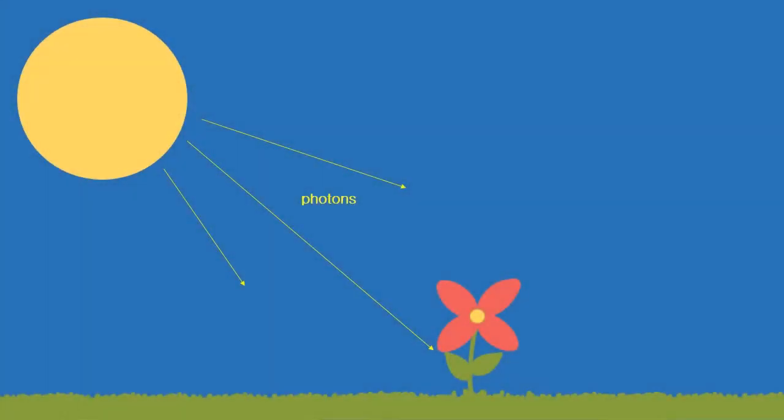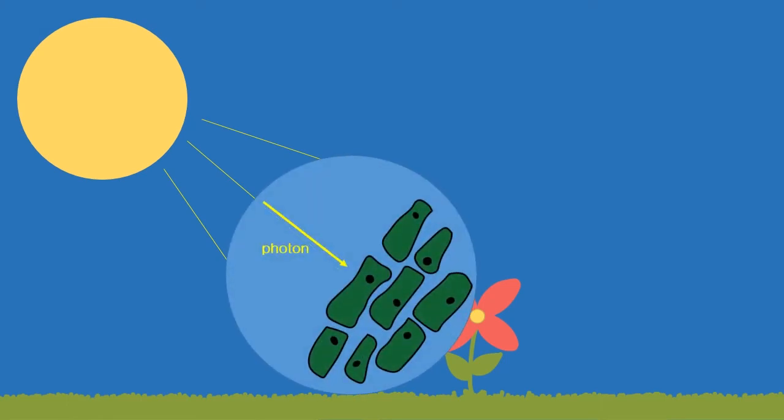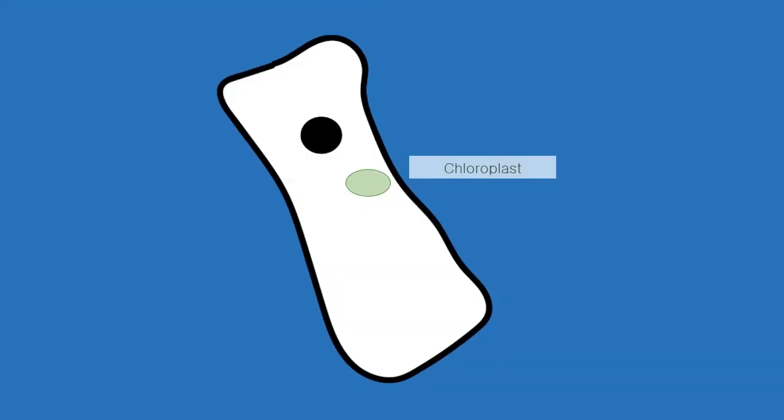Photons from the sun or another light source interact with specific molecular complexes found in plant cells. Photosynthesis takes place in an organelle or specialized subunit of the cell called chloroplast. Other pigments can be found in plants, but the pigment chlorophyll in chloroplast actually gives plants their green color.